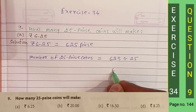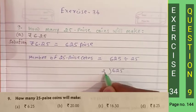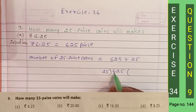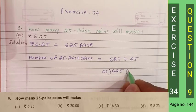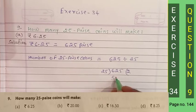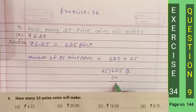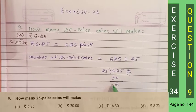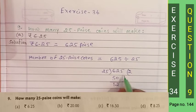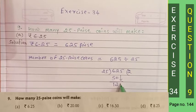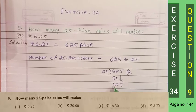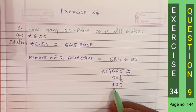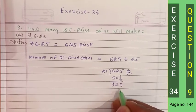We divide 625 by 25. We count the table of 25 — taking two digits, 25 twos are 50, then we subtract. 26 minus 5 gives 1, then 5 is remaining. We bring down the next digit and this number becomes 125.